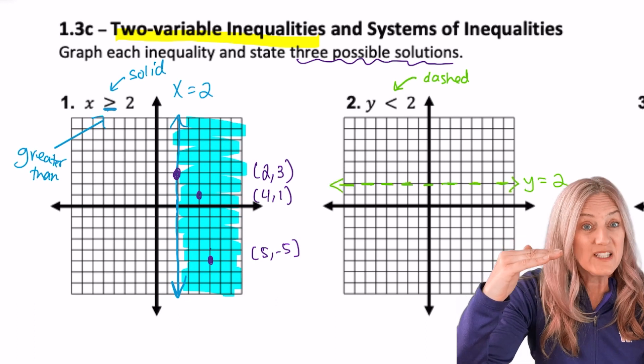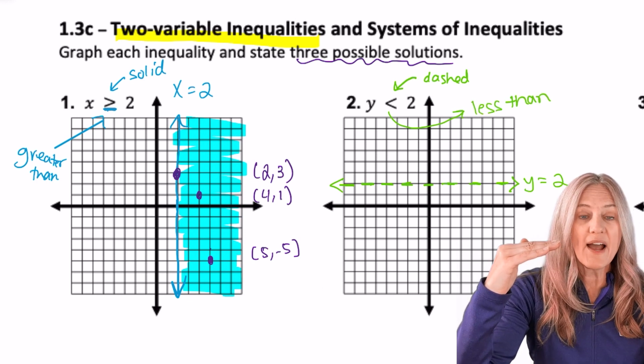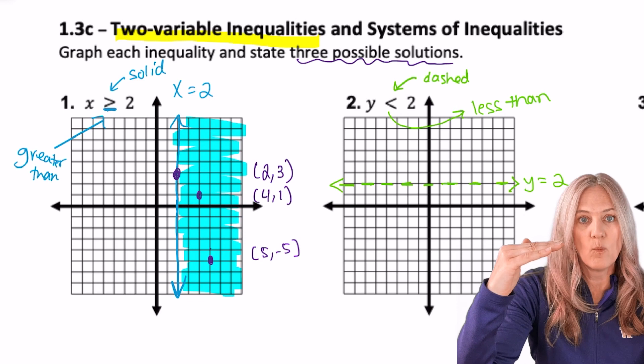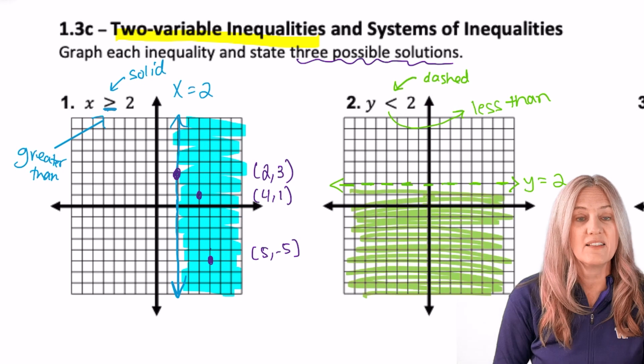Now what about where do we shade? Well, this time, y's are less than 2. So think on the y-axis, less than 1, 0, negative 1. So we'll shade below that line.